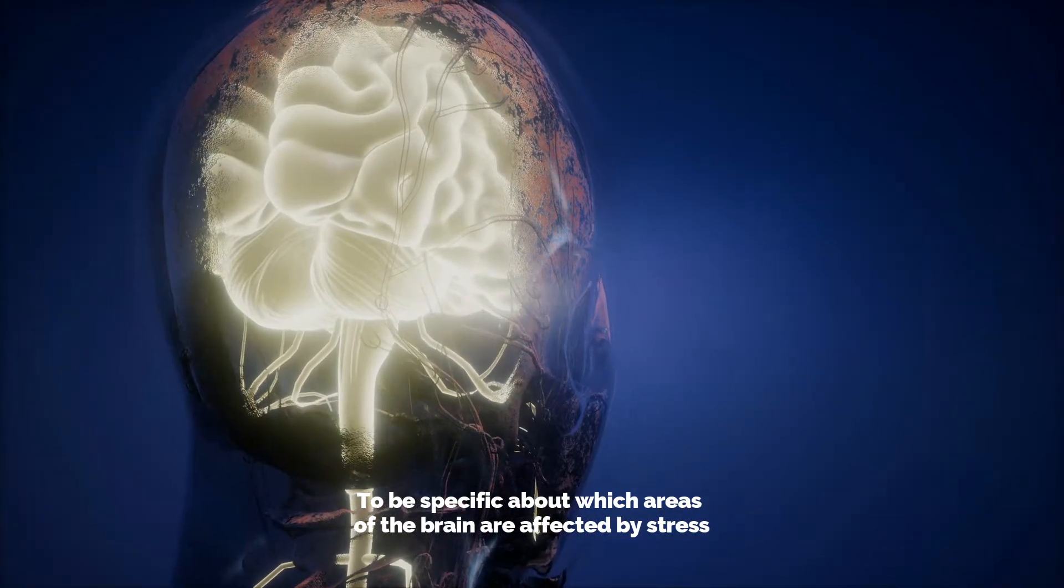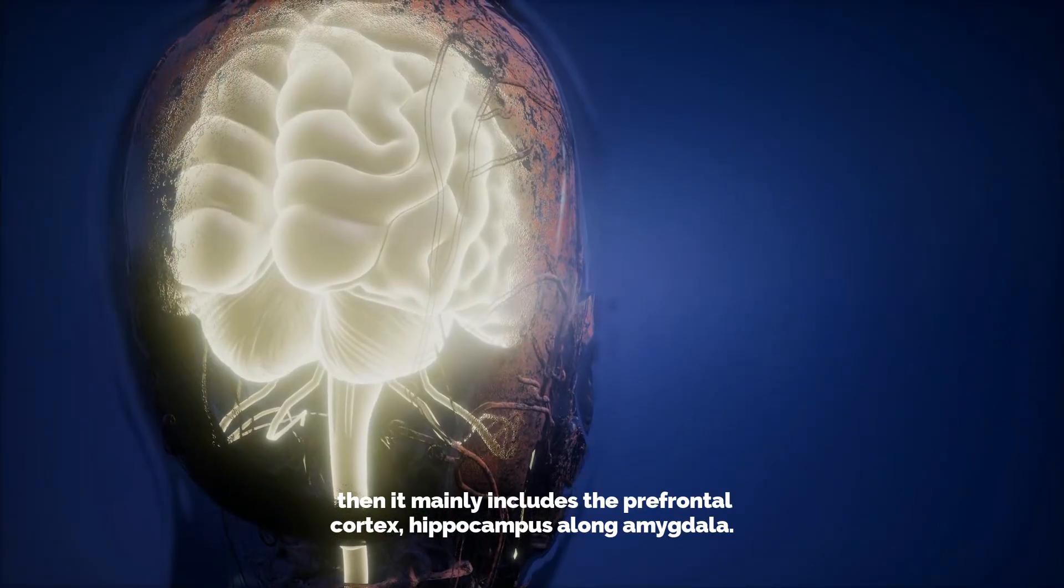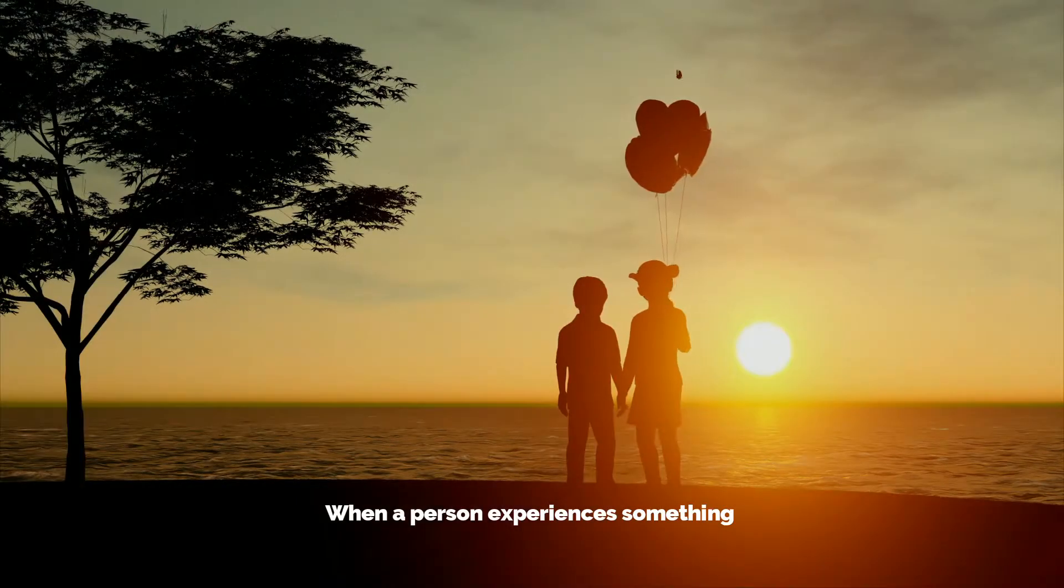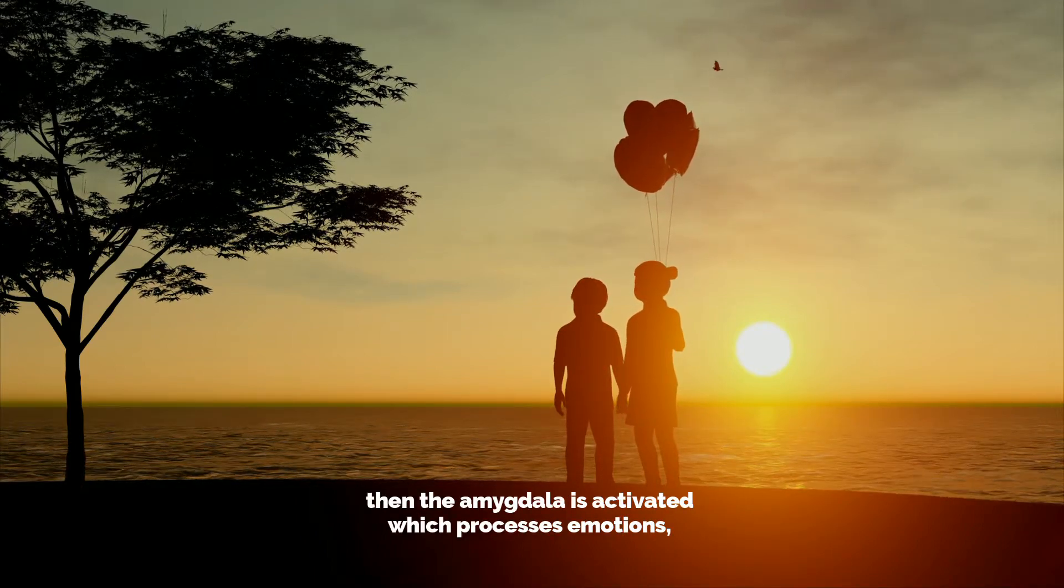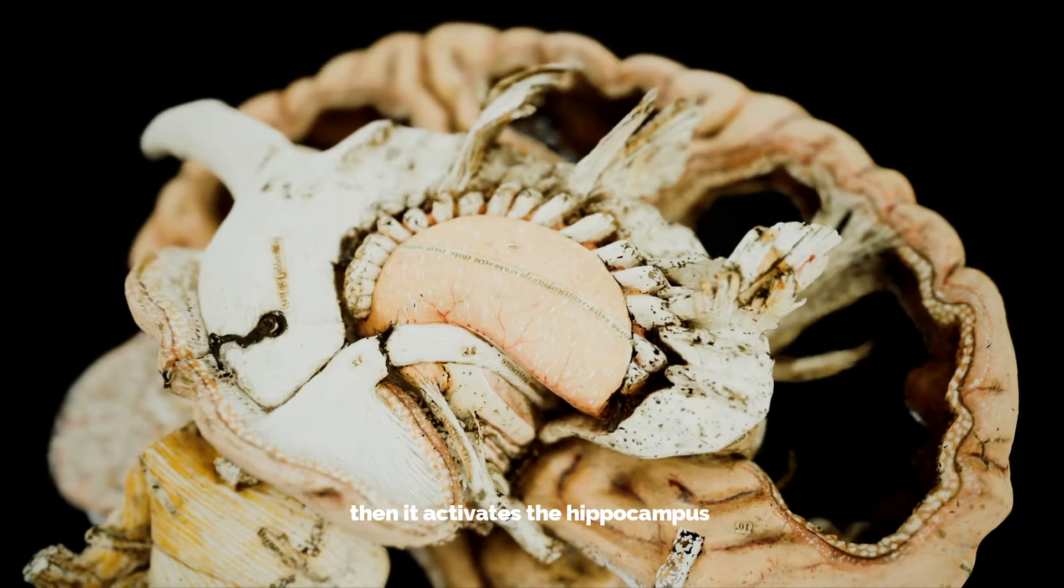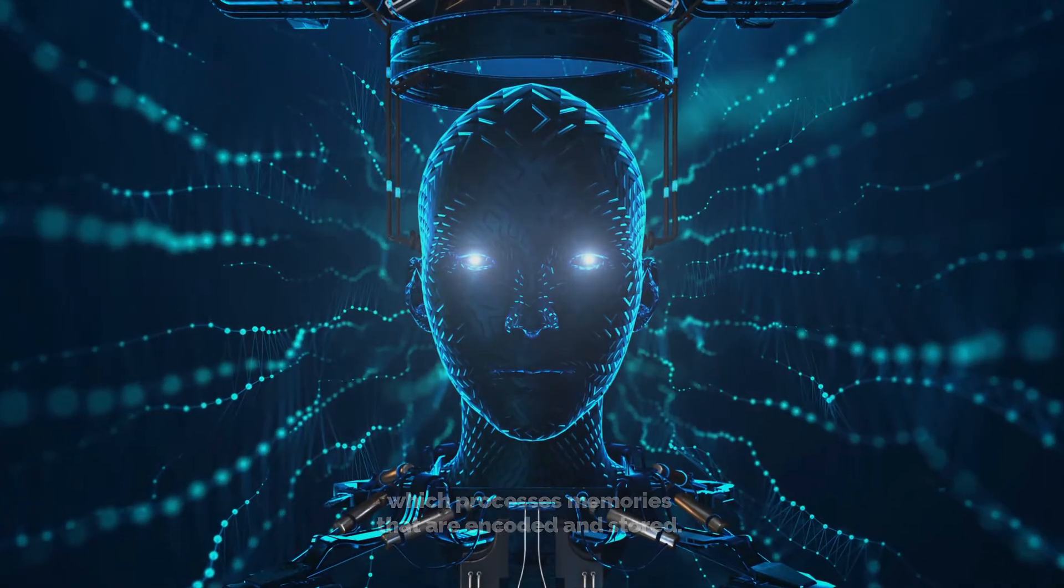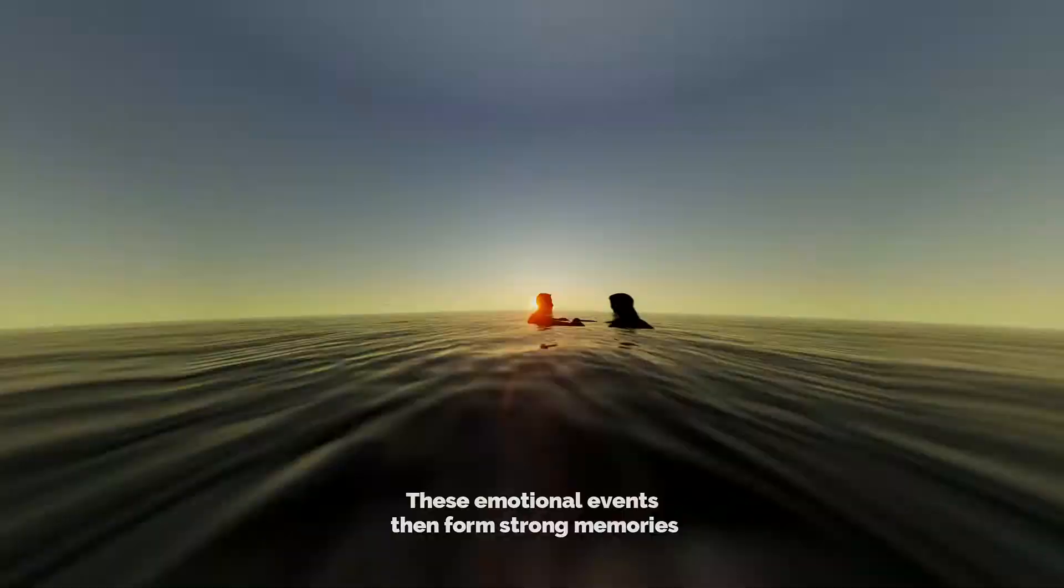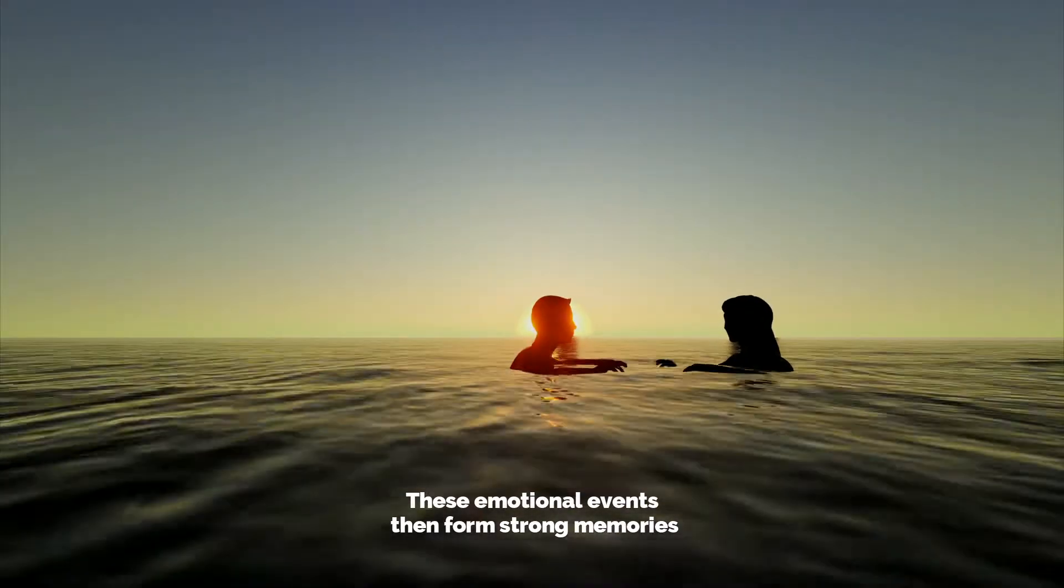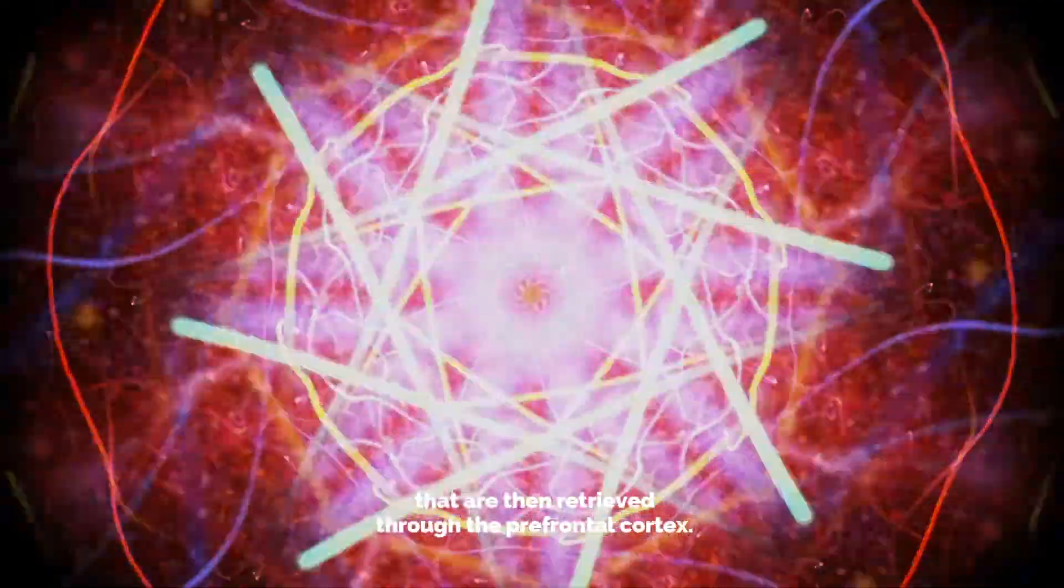To be specific about which areas of the brain are affected by stress, it mainly includes the prefrontal cortex, hippocampus, and the amygdala. When a person experiences something, the amygdala processes emotions, then activates the hippocampus which encodes and stores memories. These emotional events form strong memories that are retrieved through the prefrontal cortex.